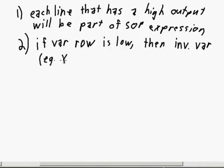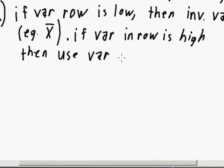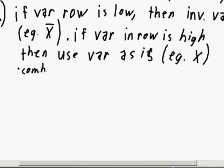So if the variable was X, we would invert it, we use not X. And if the variable in the row is high, then you just use the variable as is in your product expression. So if our variable was X and it was high for that particular row, we just use X. And then combine all the variables by ANDing them together. This is the product form.